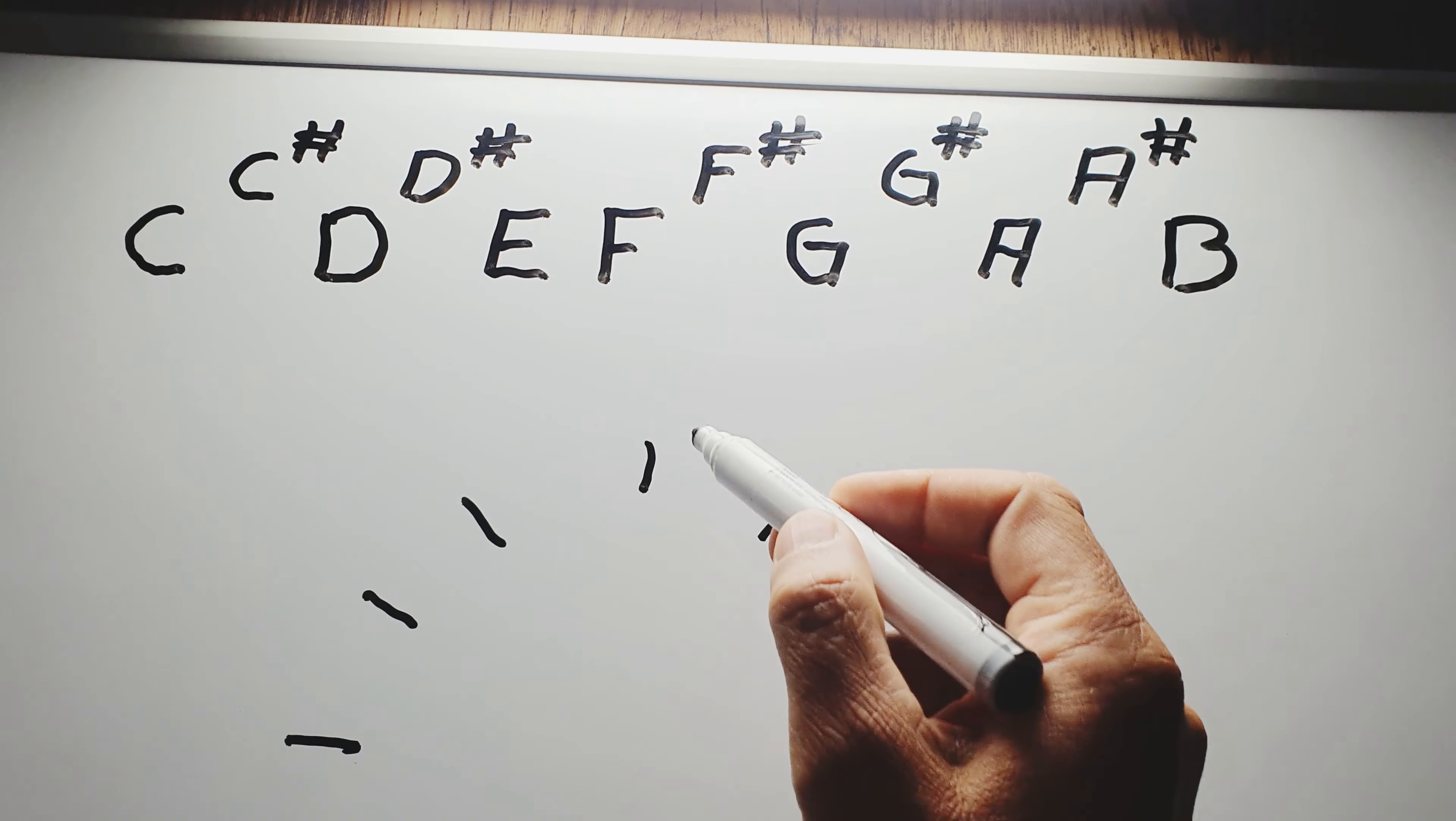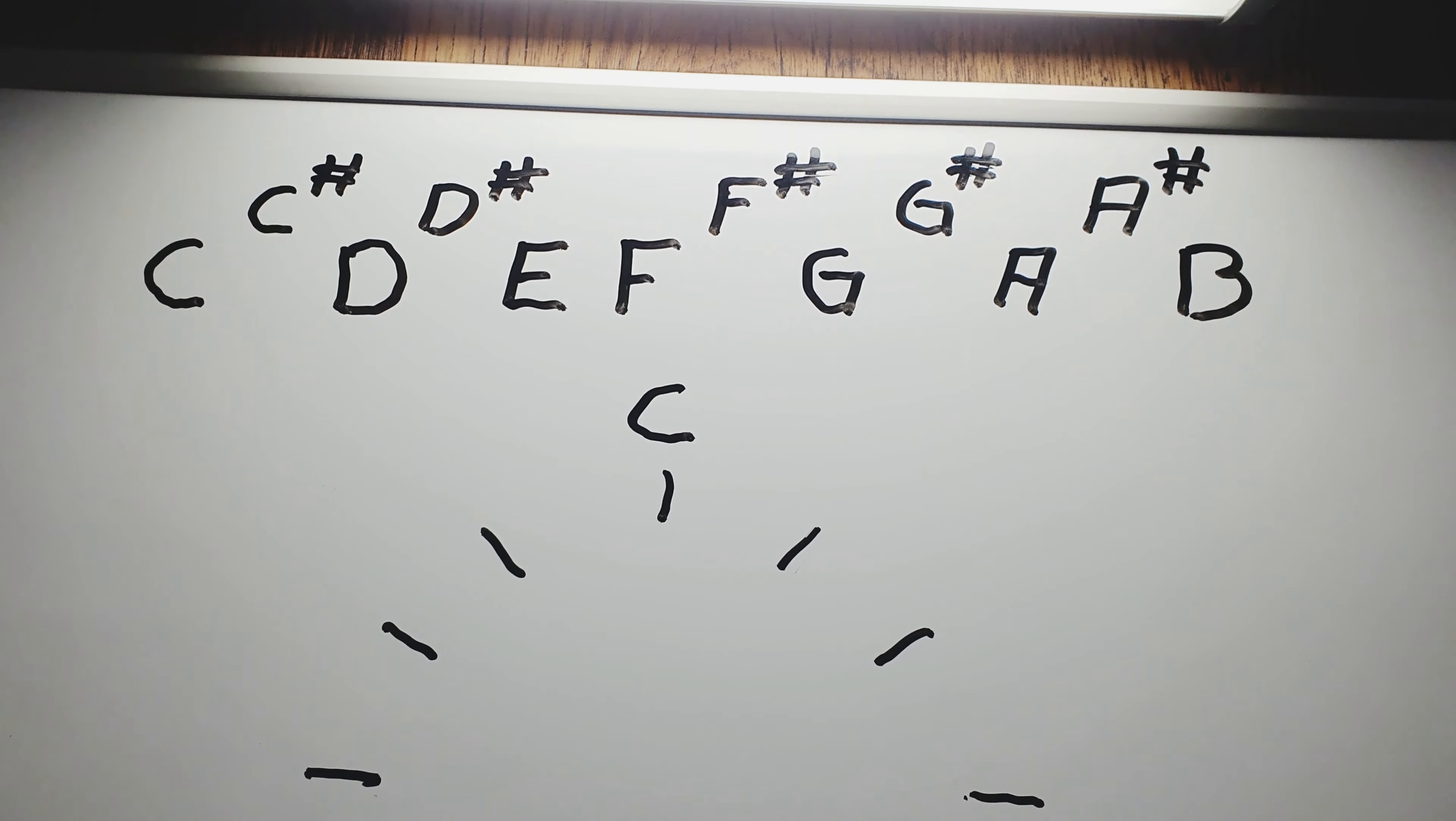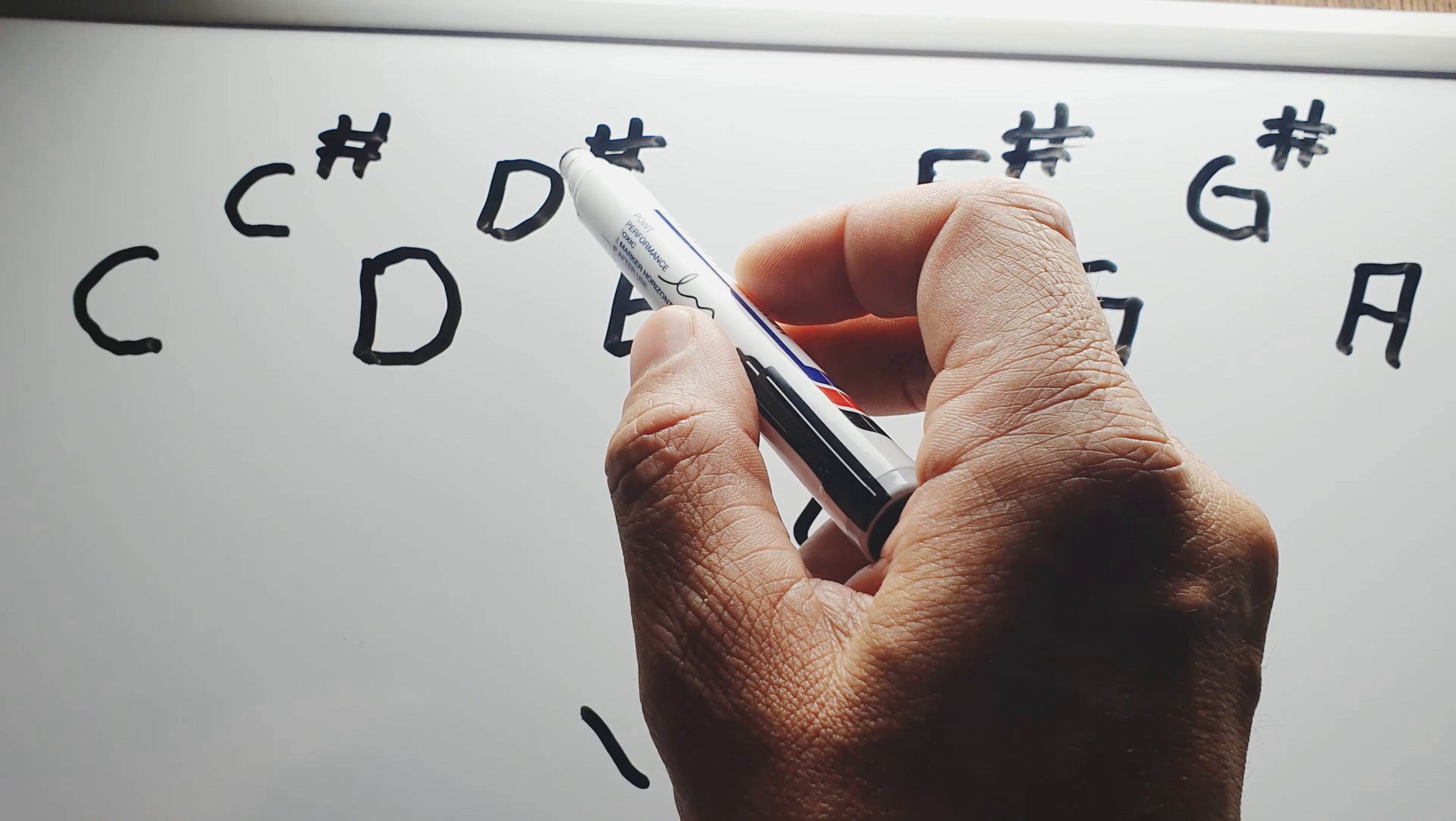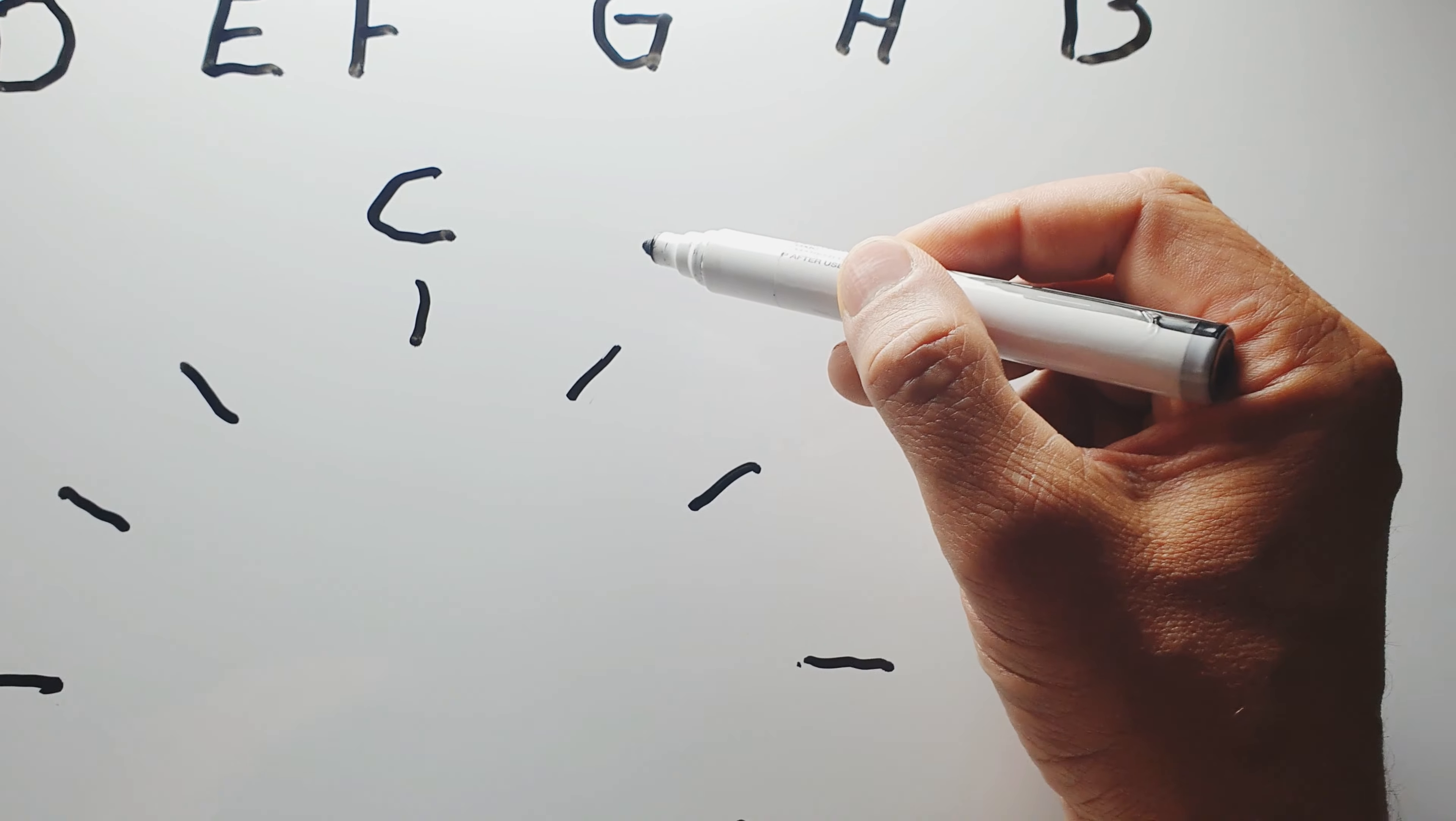Then I will put the first note in the octave at 12 o'clock: the C. And now we must find the fifth to the C. This by counting seven halftone steps to the right: 1, 2, 3, 4, 5, 6, 7. A G. And I'll put it on one o'clock.